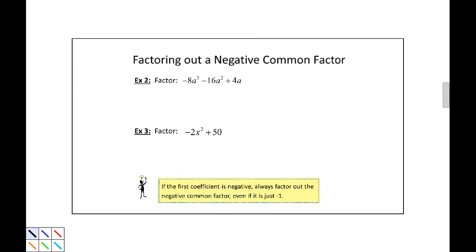Alright, now the question comes up, what do we do if we have a negative common factor? Well, in example two, we have factor negative 8a cubed minus 16a squared plus 4a. And the rule of thumb here is that if the first term, your leading coefficient, if the leading coefficient is negative, we're going to make our GCF be a negative number.